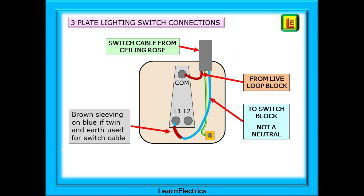Compare this to the three-plate lighting switch. Only the switch cable from the ceiling rose enters the switch, and there is no neutral at the switch. Also notice that there should be brown sleeving on the blue conductor if standard twin-earth cable is used, to show that the blue conductor in this case is not a neutral — it is, in fact, a switched live.